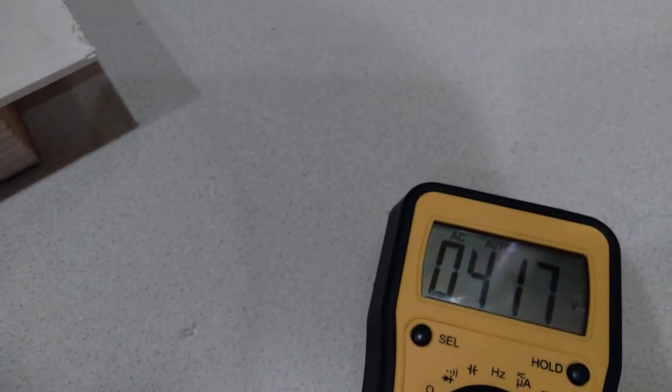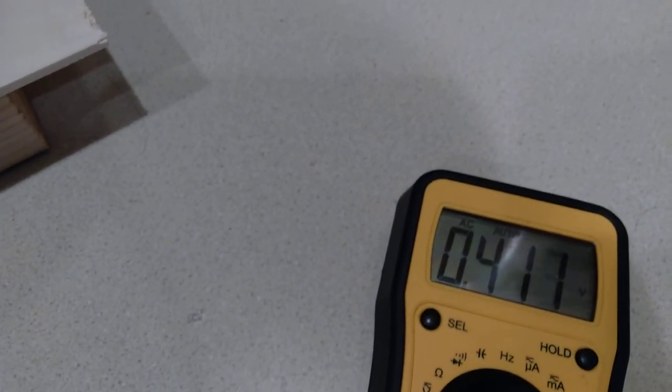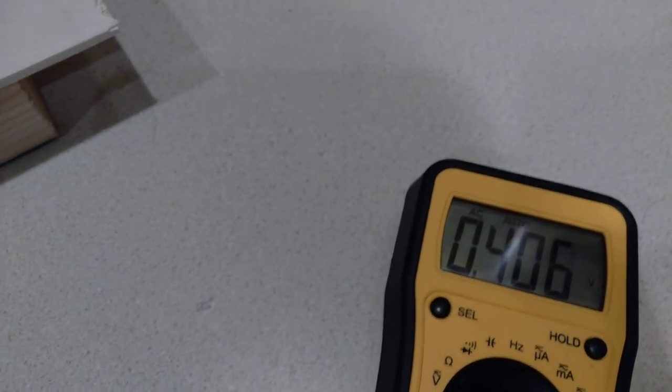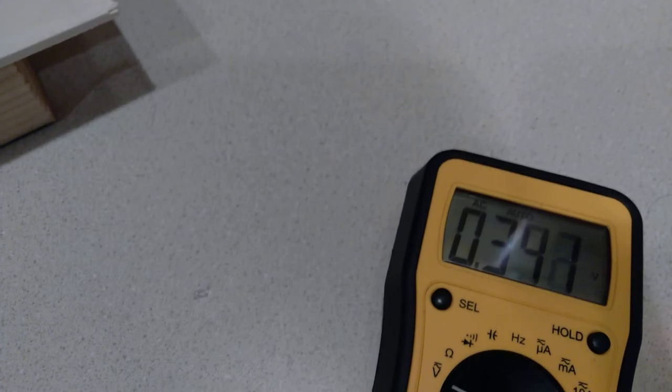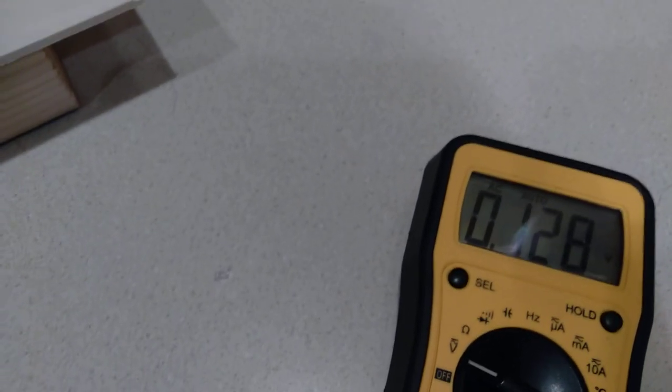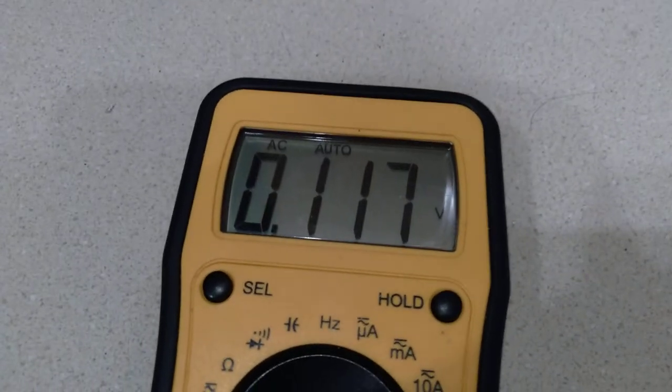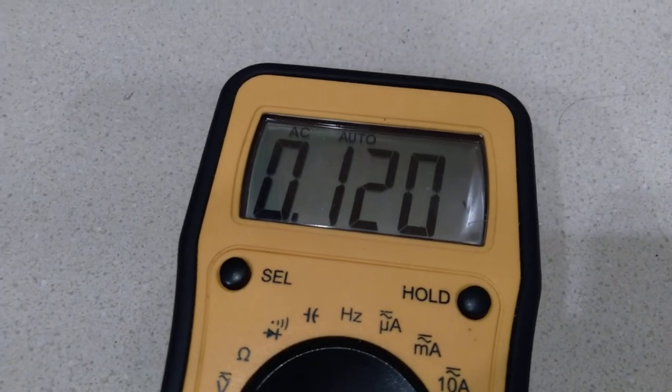I'll bring the block of wood down again and place it on the counter. And we're back at 0.11 volts, 0.2, 0.12.